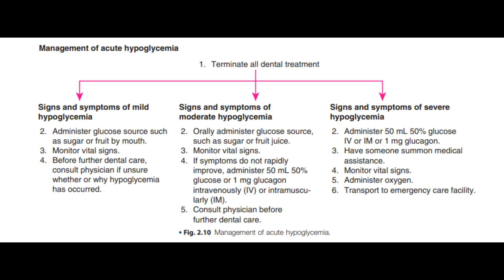For severe hypoglycemia, do not give anything orally — administer glucose directly intravenously. A third option is to give epinephrine subcutaneously. Transfer the patient to an emergency facility immediately.